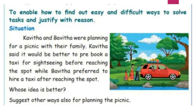Let us see whose idea is good. There were two girls named Kavitha and Bhavitha. They were planning for a picnic with their family members. Kavitha said it would be better to pre-book a taxi for sightseeing before reaching the spot. But Bhavitha preferred to hire a taxi after reaching the spot. Do you think who has a better idea? This is about thinking about information processing — whose information is correct? This is an activity you have to think about while doing sums as well as while speaking.